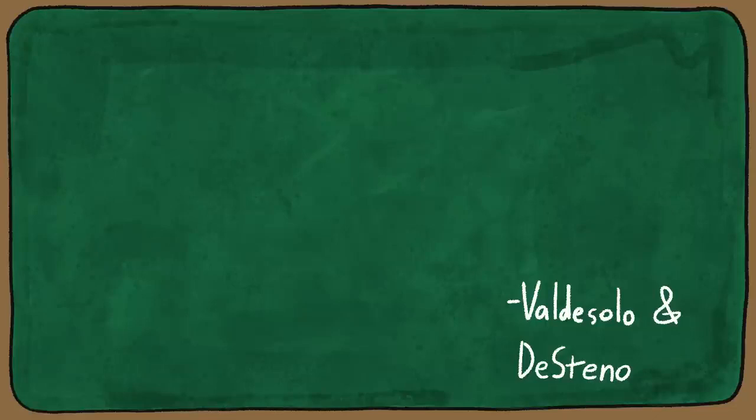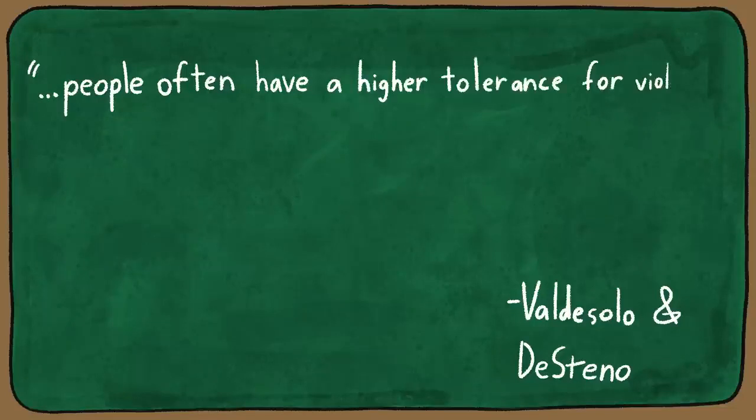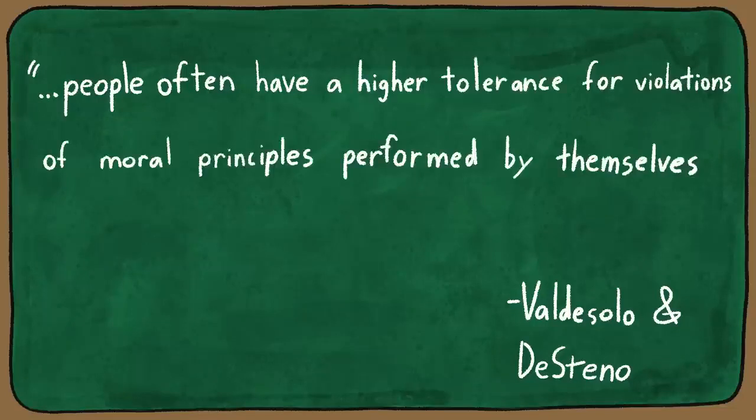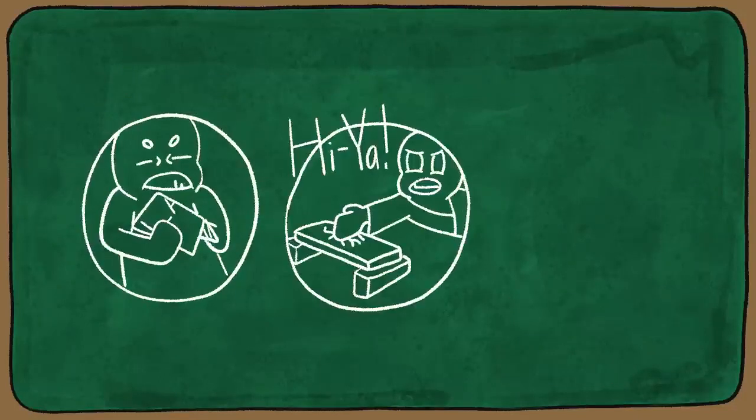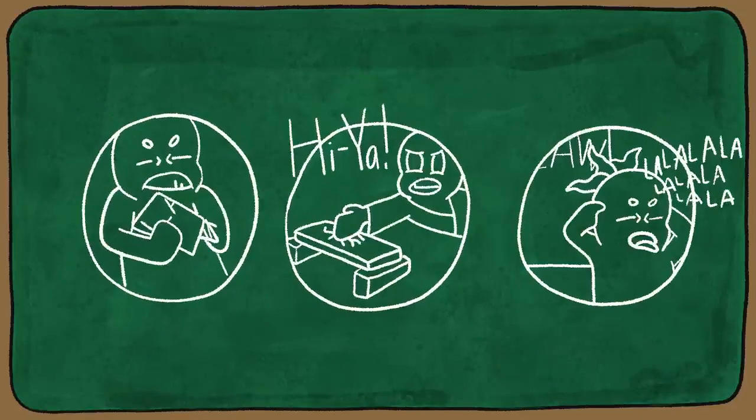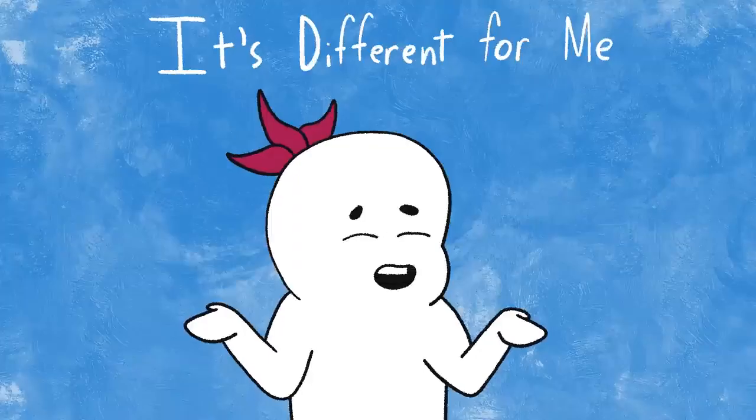A study by Valdezolo and Desteno in 2008 revealed that people often have a higher tolerance for violations of moral principles performed by themselves or in-group members. They will definitely bend, break or completely ignore a law, principle or rule, because it's different for me.